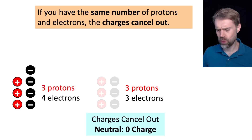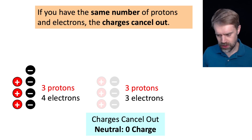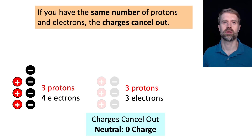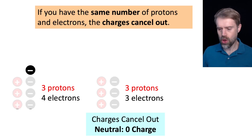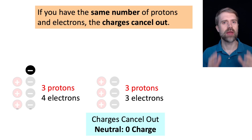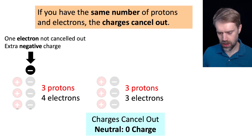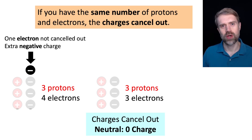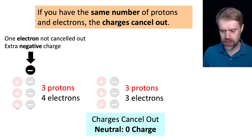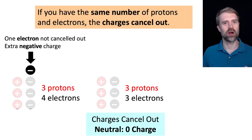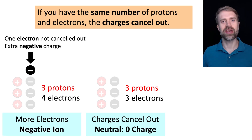What about this situation: what if we have an atom with three protons and four electrons? Three of the protons and three of the electrons will cancel out, but there will be one extra electron that's not canceled out. Electrons have a negative charge, so we'll have one extra negative charge in the atom, meaning the atom will have a negative charge and it will be a negative ion.